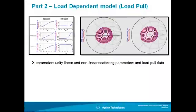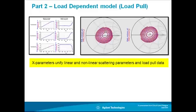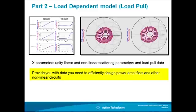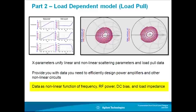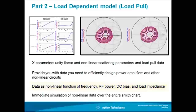Let me recap and summarize key points from this video. We saw how X parameters unify the linear and nonlinear scattering parameters and load pull data all over the Smith chart, allowing you to efficiently design your power amplifiers and other nonlinear circuits. This X parameter data can be generated as a nonlinear function of frequency, RF power, DC bias, load impedance, temperature, or any variable that you wish to sweep. And once you have generated this nonlinear model, you can immediately start simulating all over the entire Smith chart.